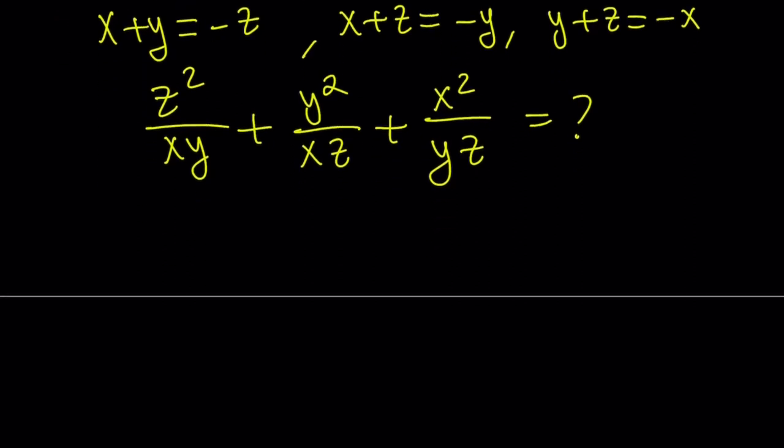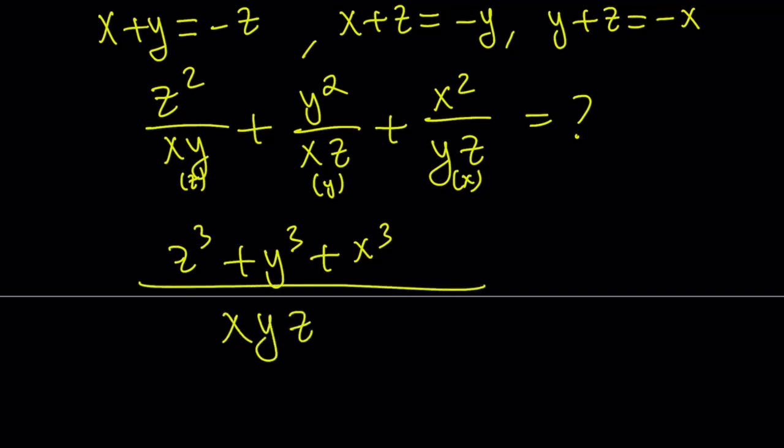If we do, we're going to have to multiply this by z, this by y, and this by x. So, that's going to give me the following: z cubed plus y cubed plus x cubed over x, y, and z. Remember, x, y, z does not equal to 0.